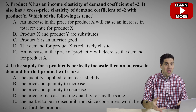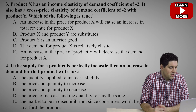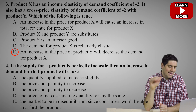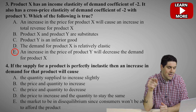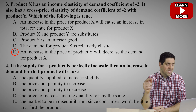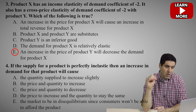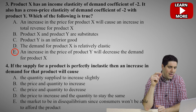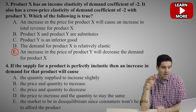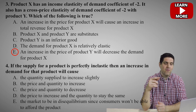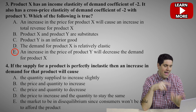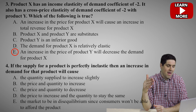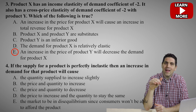In this question, you need to understand these concepts pretty well. The right answer is E: an increase in the price of product Y will decrease demand for product X. We know that because the cross-price elasticity of demand coefficient is negative. That means it's a complement. So an increase in the price of Y will decrease the demand for the complement product X. For example, if the price of milk increases, the demand for cereal will go down.